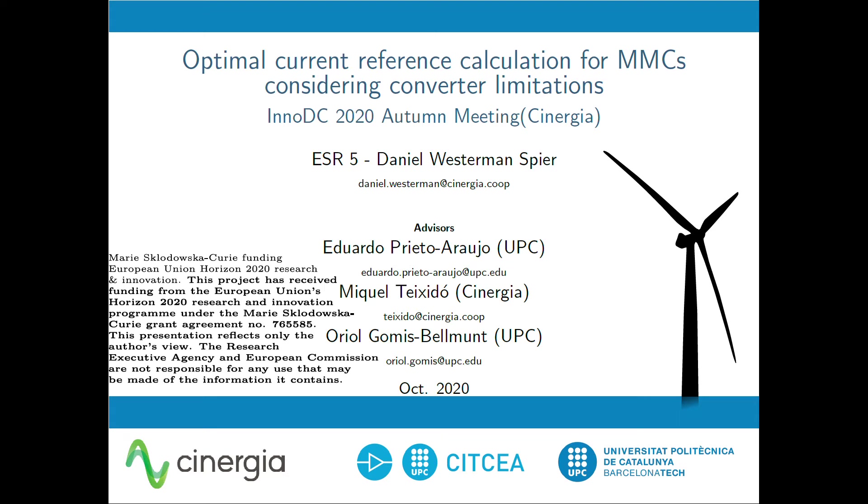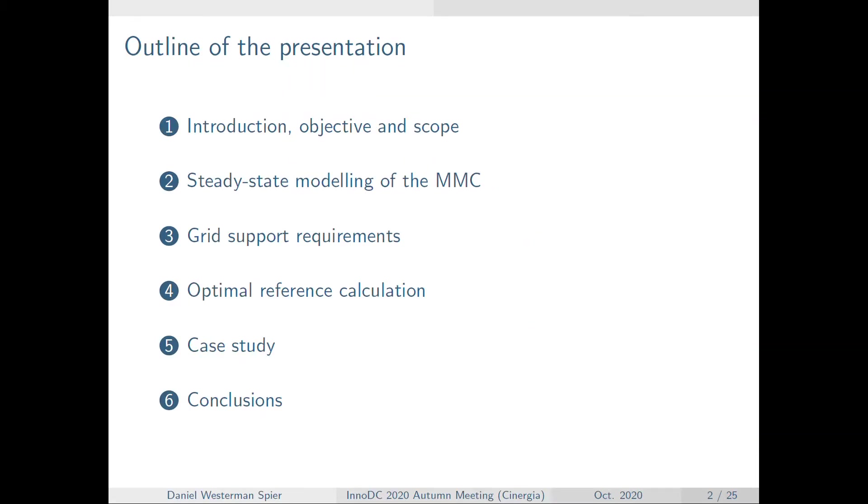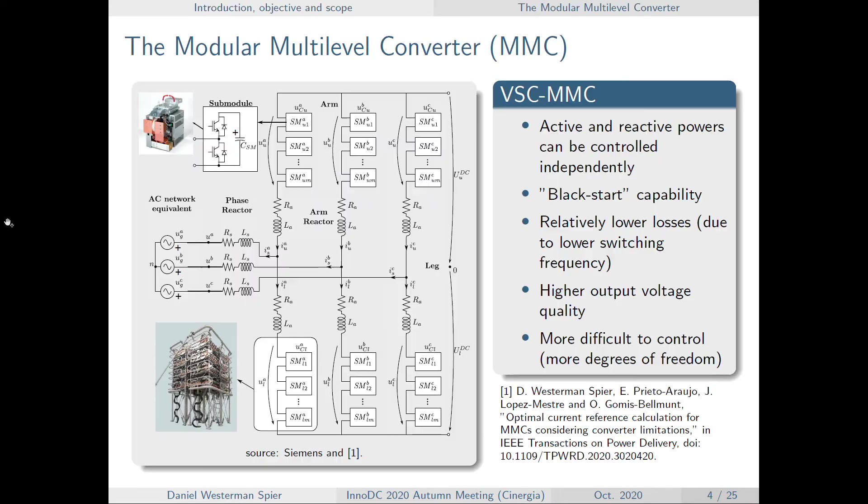Hello everyone, I'm Daniel Veselman-Schpier, the ASR number 5 of the NODC project, and I'm pleased to present our most recent publication named Optimal Current Reference Calculation for MMCs Considering Converter Limitations. This presentation will be divided into six topics, and let's start with the introduction.